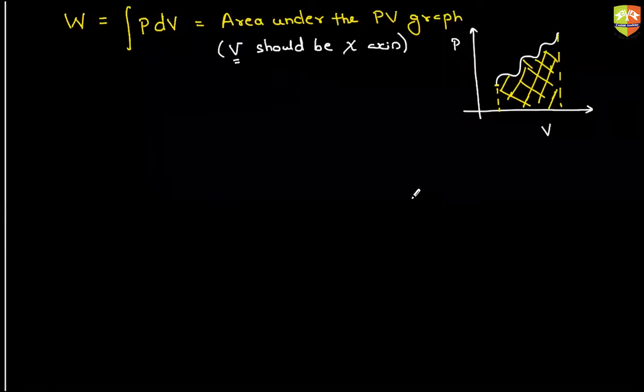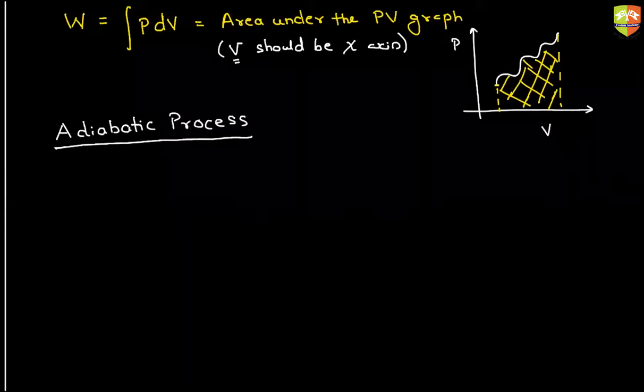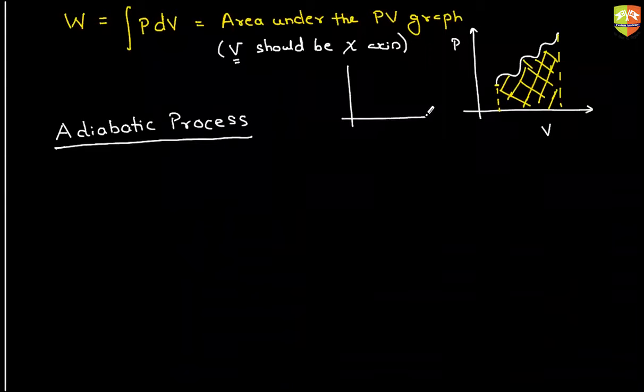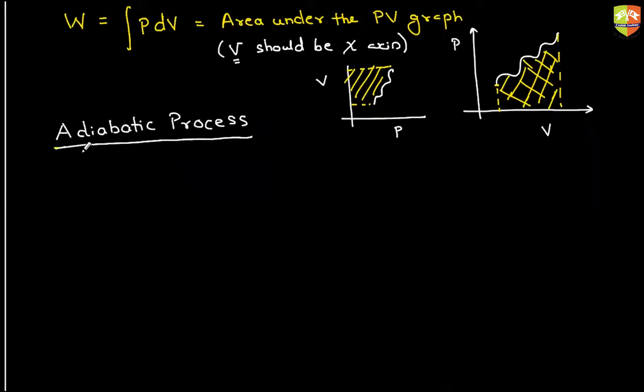Coming back to the next, which is adiabatic process. Sir, what will happen if you take volume on the Y axis? If suppose this graph is like this, V and P, and this is the process you have followed, then you have to consider this area. That is the work done, but this is not the area under the graph. This is area left hand side of the graph. You can say under only when the X axis is volume.